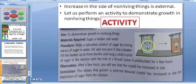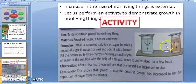A sugar crystal is tied with a thread and leave it for some time undisturbed for few hours. After few hours you will notice that the crystal size has been increased. This shows that growth is external because crystal has increased in size due to the deposition of sugar from the solution. From the saturated solution of sugar, the sugar has been added and deposited into this sugar crystal and the size is increased. So this is external growth.